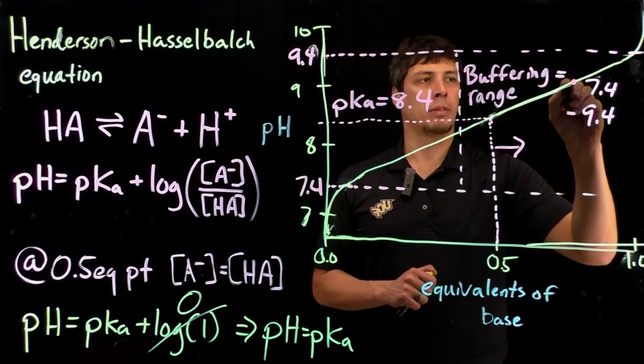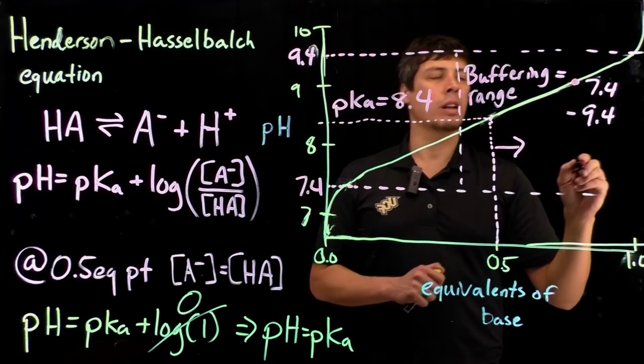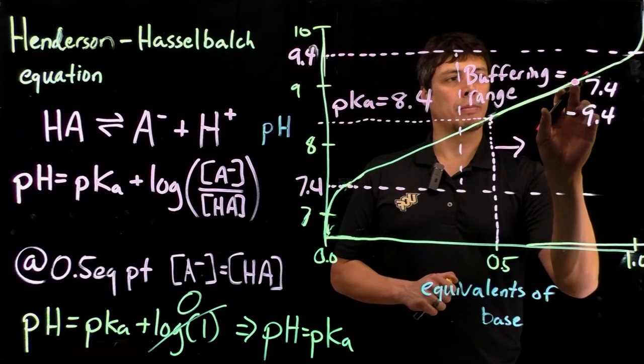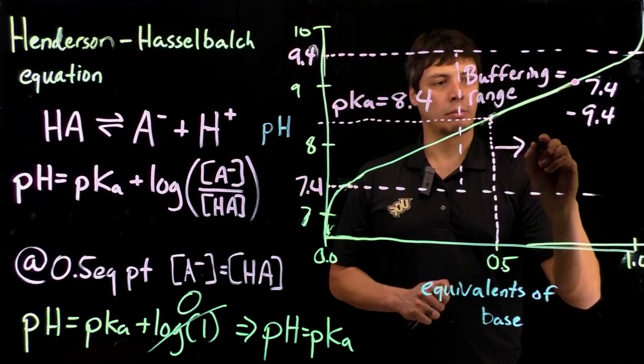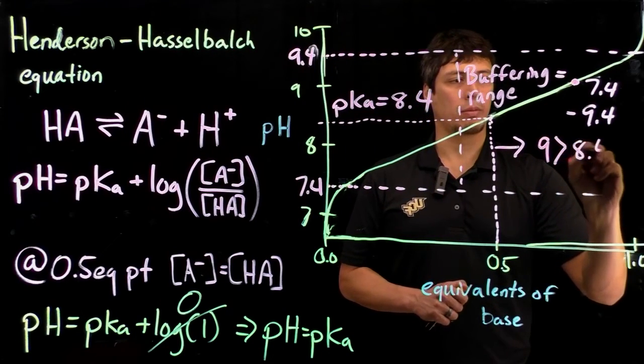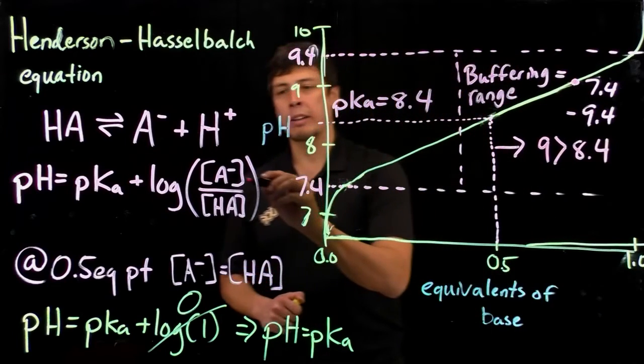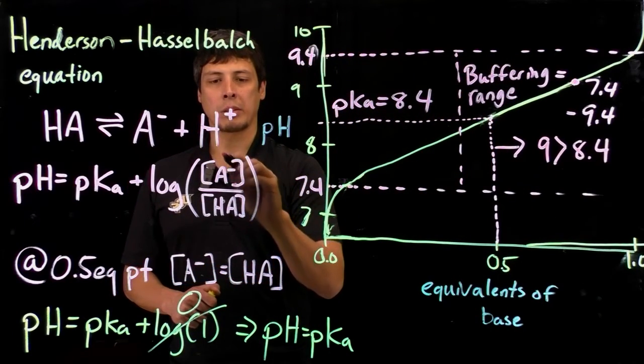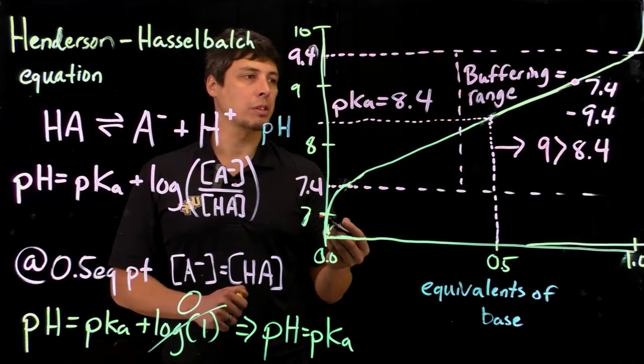If we're at pH 9, then that means we're above the pKa. 9 is greater than 8.4. So we're going to have more conjugate base than we will have acid in terms of concentration.